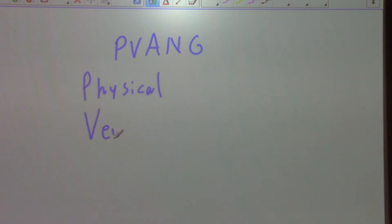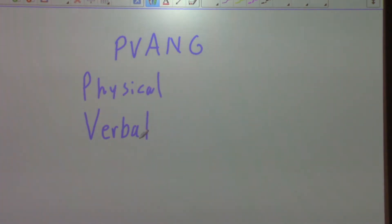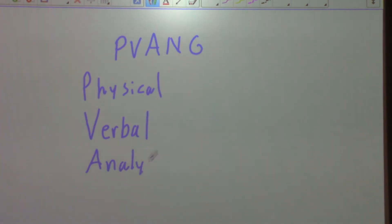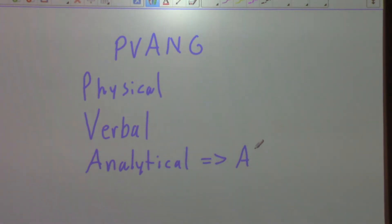V represents Verbal — so we have a verbal articulation of a situation. We represent the physical world using verbal. And then A represents what we call Analytical, or Analytic. Usually this has its representation in algebraic symbols — Algebra.